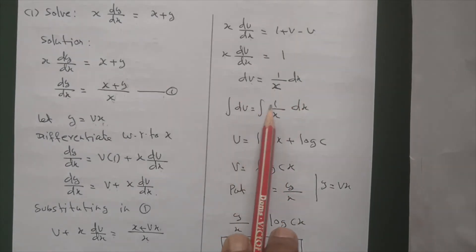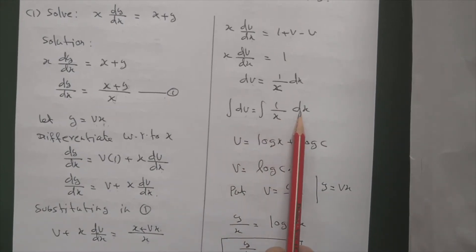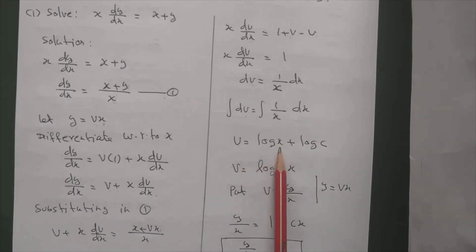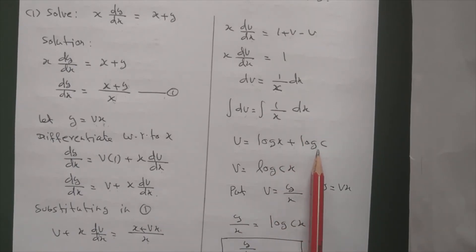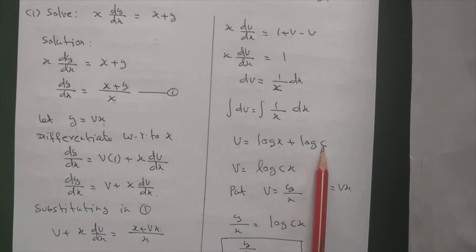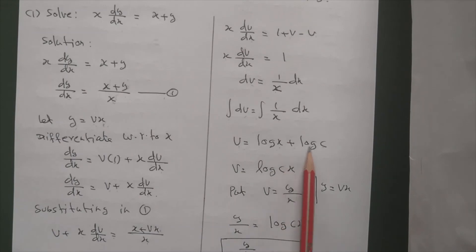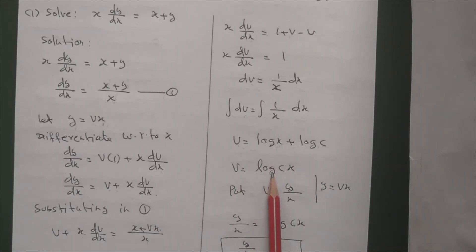So x dv/dx equals 1. Now we can integrate on both sides after separating variables: integral dv equals integral (1/x) dx. Integrating: v equals log x plus constant. For homogeneous equations, write the constant in the form log c. So v equals log x plus log c, which gives v equal to log(cx).